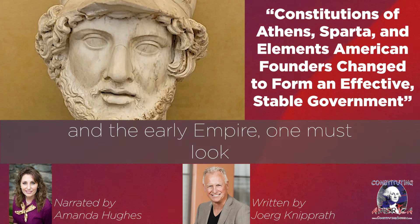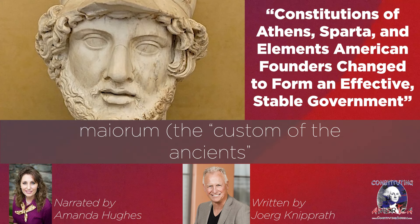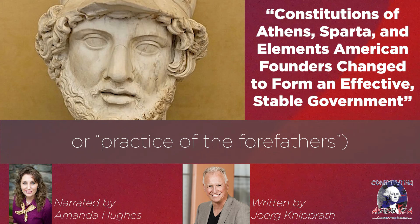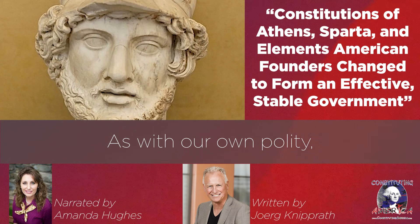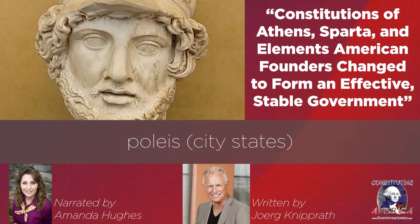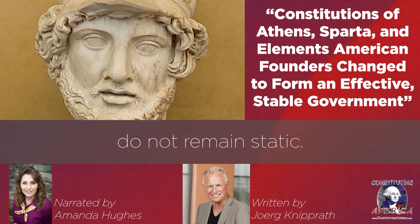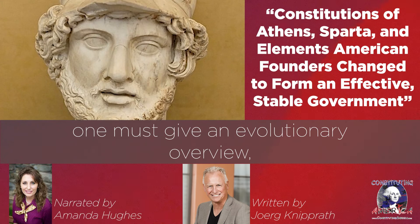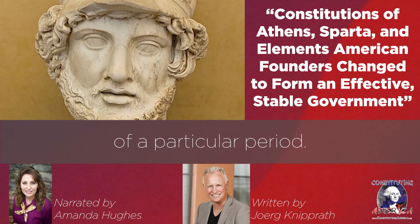For the Roman Republic and the early Empire, one must look to the use of constitutional custom through the Mos Maiorum — the custom of the ancients, or practice of the forefathers — to understand the political order. As with our own polity, it would be foolish to describe the constitutions of the Greek poleis, city-states, as unchanged over the centuries of their existence. Thus, cultural perspectives and societal needs do not remain static. One must give an evolutionary overview, made more specific through a snapshot of a particular period.